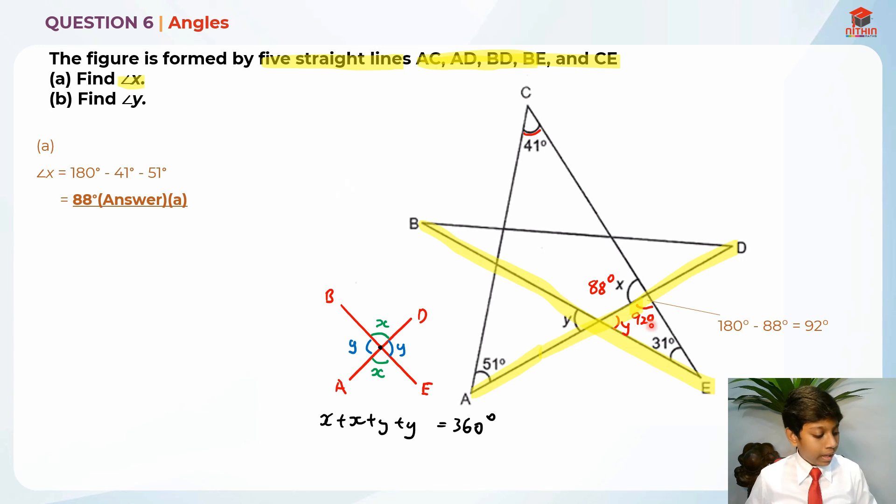In order to find angle Y, we just need to take this triangle and minus 92 degrees and 31 degrees. Because in a triangle, there's 180 degrees in total. So 180 degrees minus 31 degrees minus 92 degrees is equal to angle Y, which will give us 57 degrees as the answer. And this is because of the vertically opposite angles.